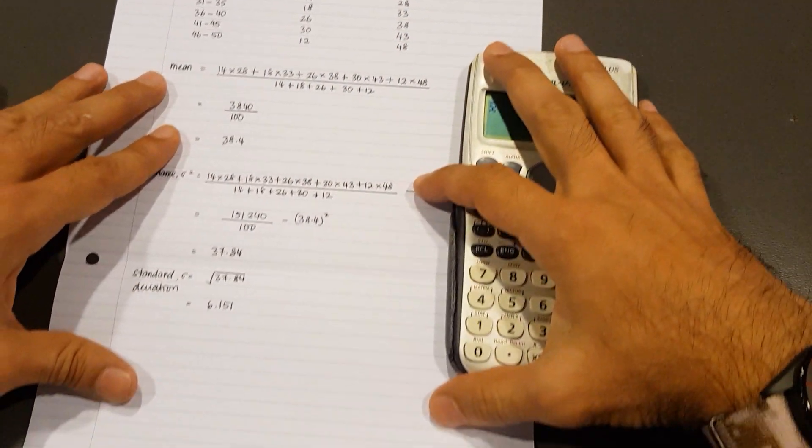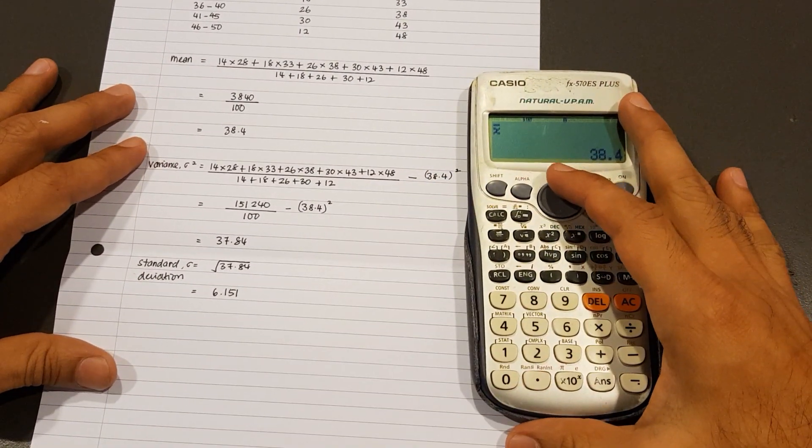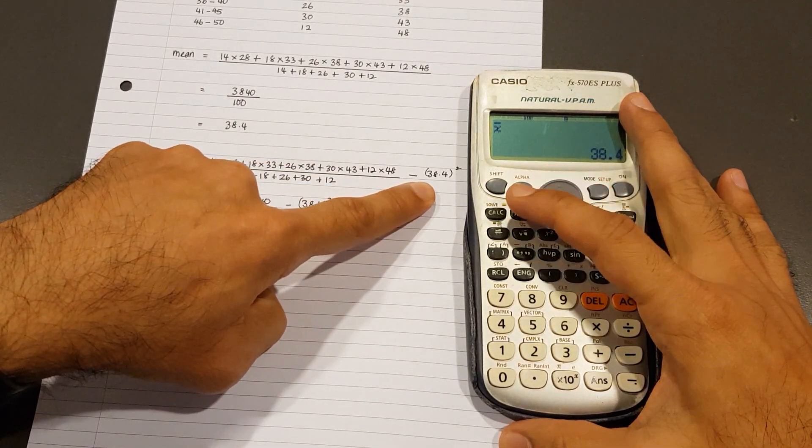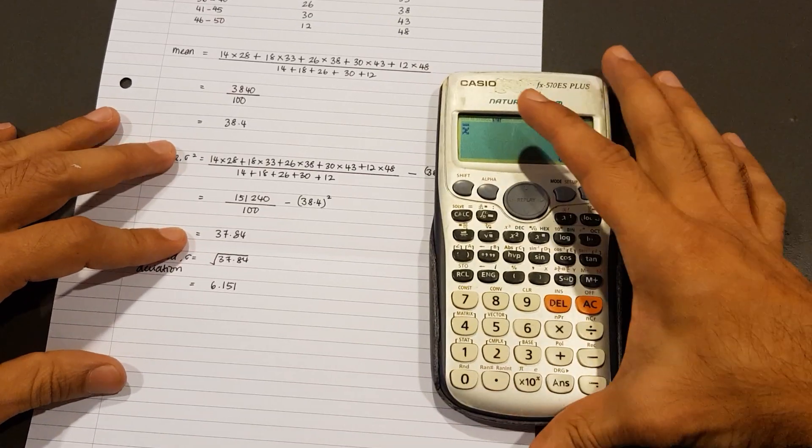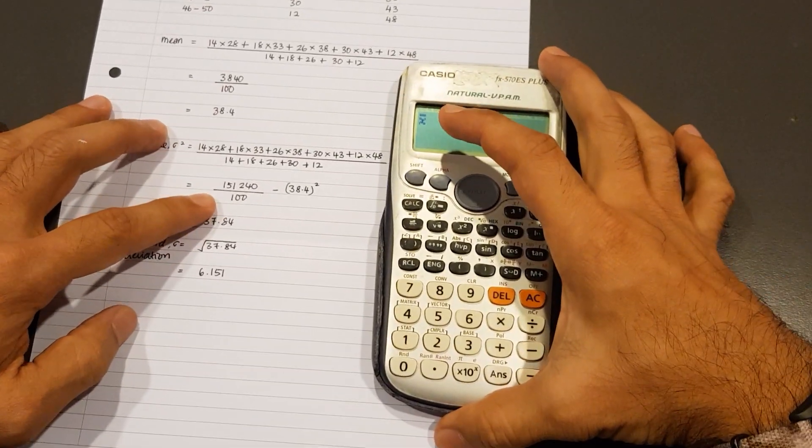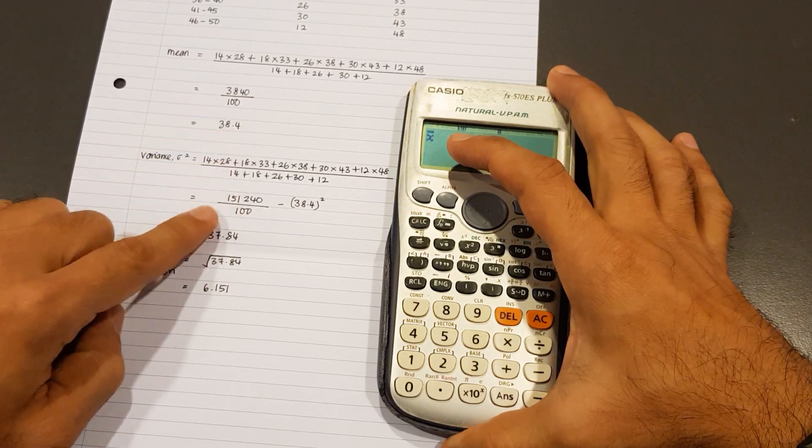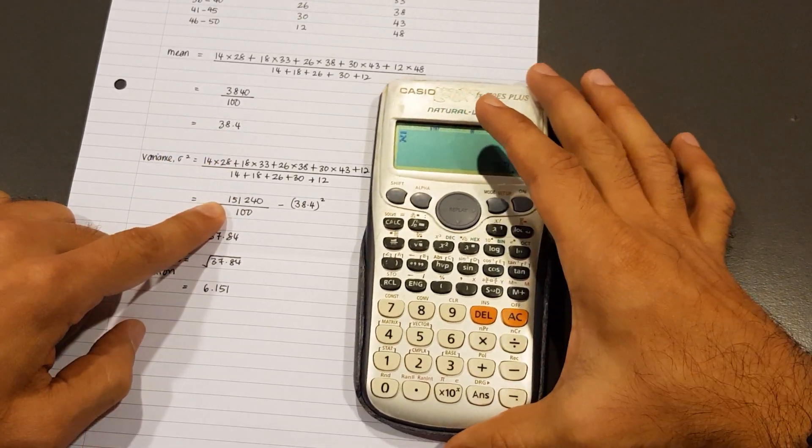Now, as for the variance and the standard deviation, the mean value has to go into that bracket. Don't forget we have to square that. But we're using the calculator to obtain these values here. We already know this number is 100. Now, to get this number here, 151,240.